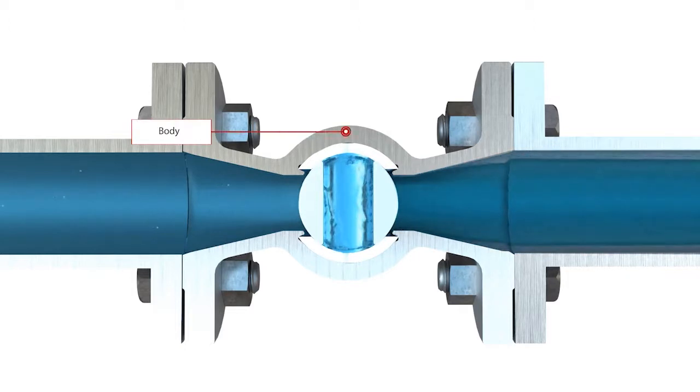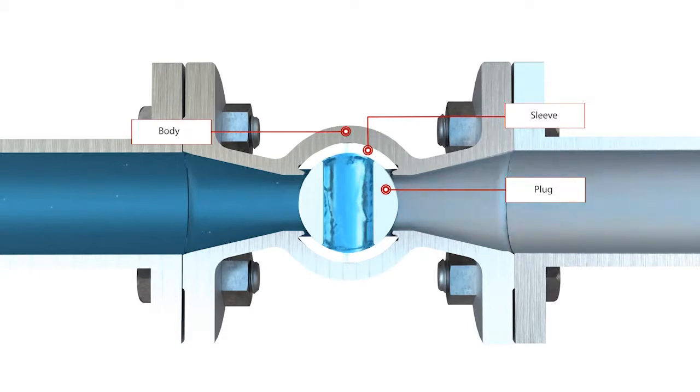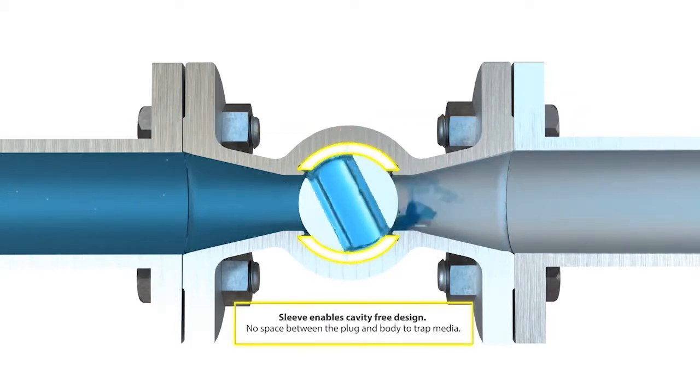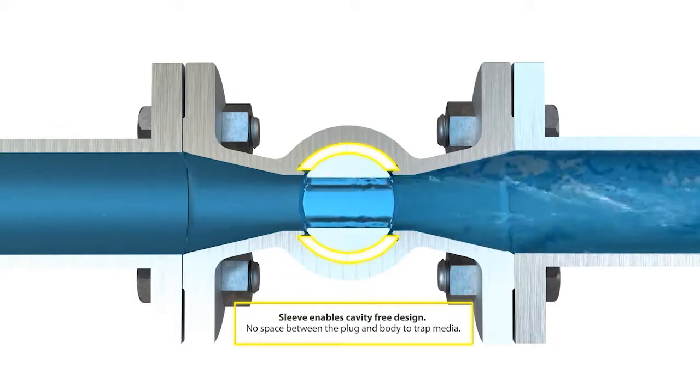The key valve components—the body, the sleeve, and the plug—are in close contact with each other, creating the cavity-free design. This means that there are no spaces between the plug and the body that can trap media when the valve is being operated.